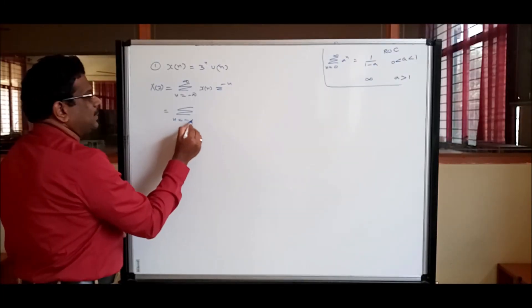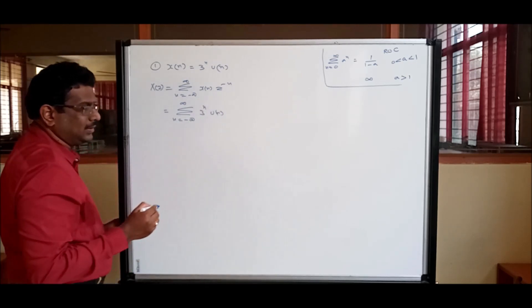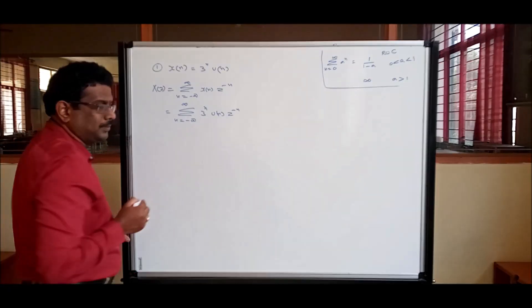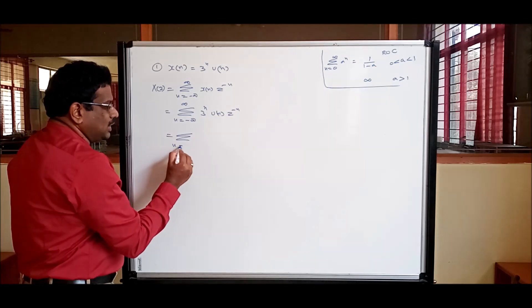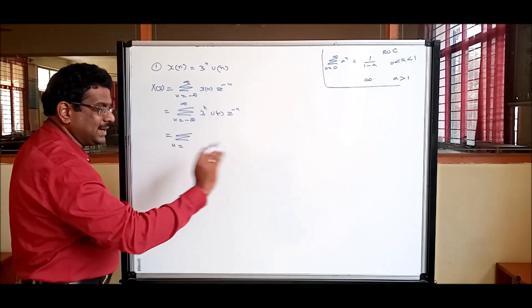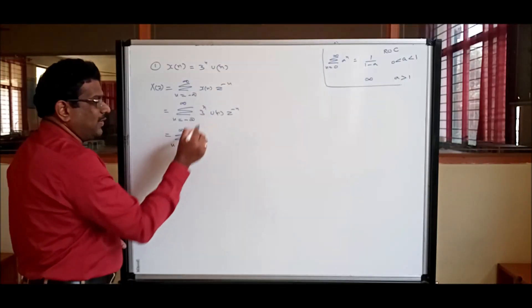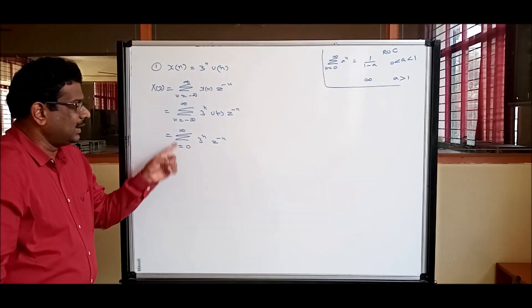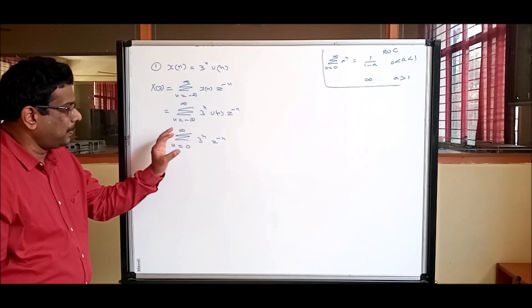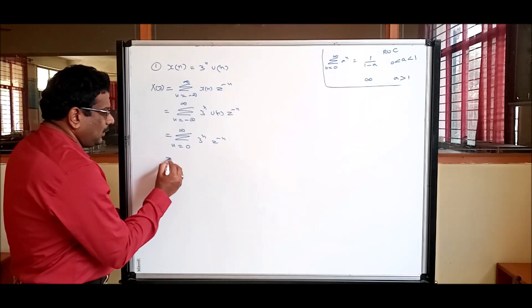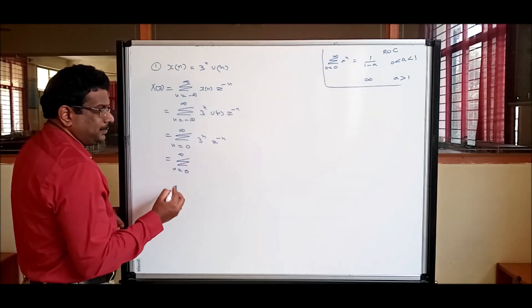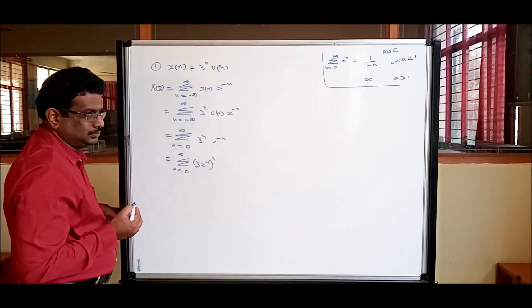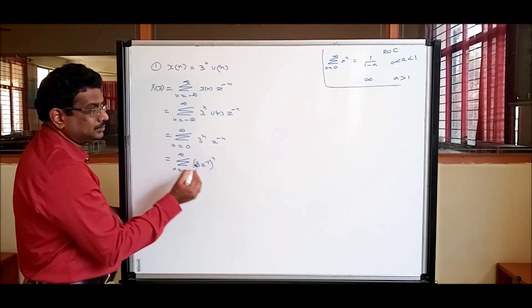The Z-transform formula is: X(z) = summation from n = -∞ to ∞ of x[n] · z^(-n). For our problem, x[n] = 3^n · u[n]. We define u[n] as having amplitude 1 on the right side from 0 to ∞. Substituting and simplifying, we get the summation from n=0 to ∞ of (3·z⁻¹)^n. This resembles the geometric series formula with a = 3z⁻¹.